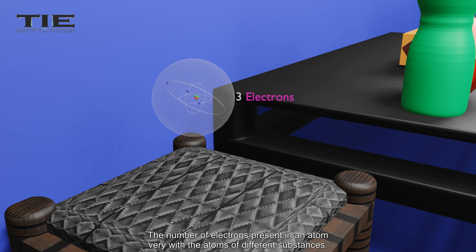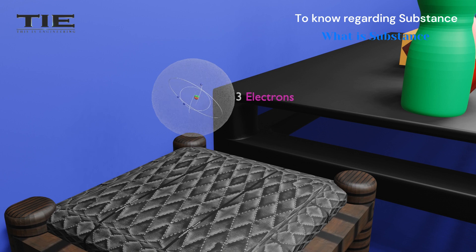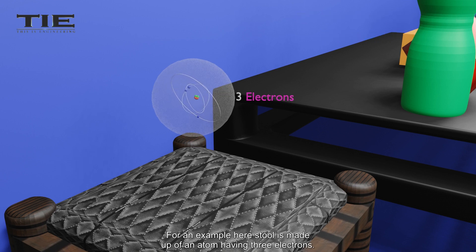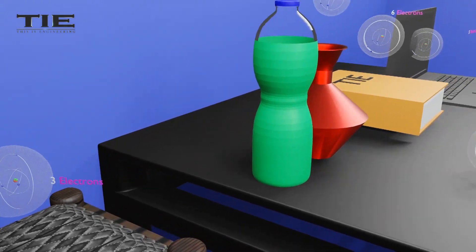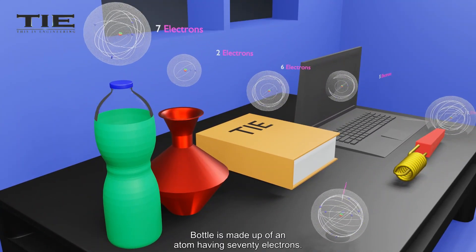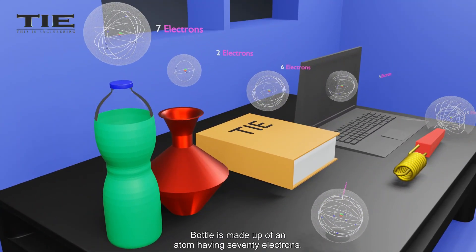The number of electrons present in an atom vary with the atoms of different substances. For an example here, stool is made up of an atom having three electrons. Bottle is made up of an atom having seven electrons.